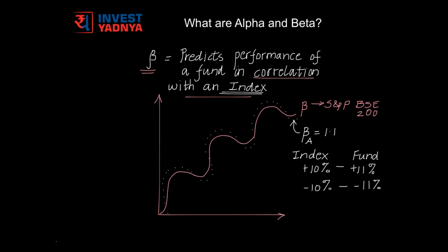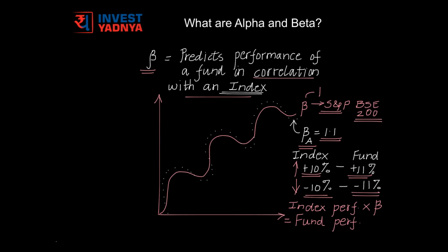Let us understand beta with the help of an example. Let us assume there is a fund called A. This is a large cap fund and has a beta value of 1.1. Since it is a large cap fund, it relates to the index S&P BSE 200. The beta value of indices is always taken as 1. This beta value of 1.1 implies that whenever S&P BSE 200 moves up by 10%, fund A moves up by 11%, and whenever this index moves down by 10%, fund A moves down by 11%. You can multiply the index performance with the beta value of the fund to find out what would be the fund performance.